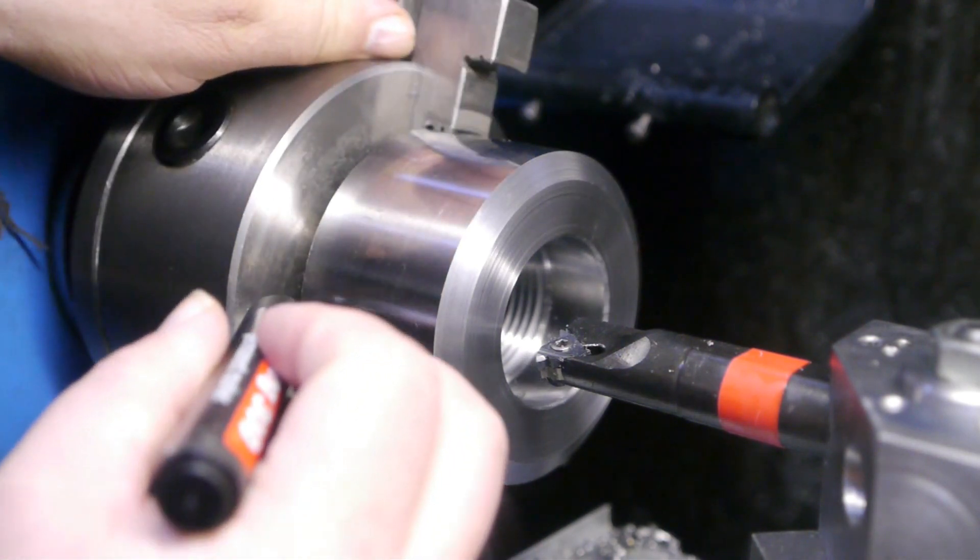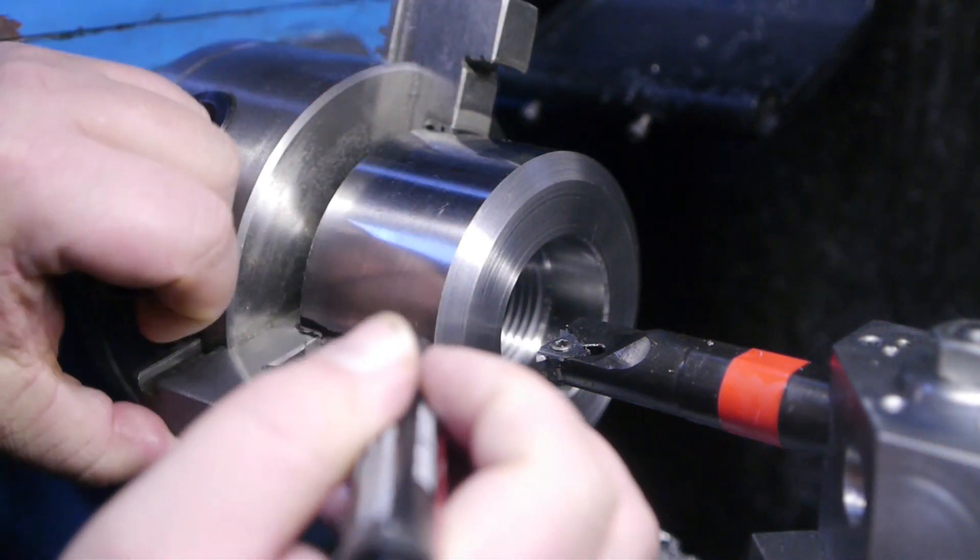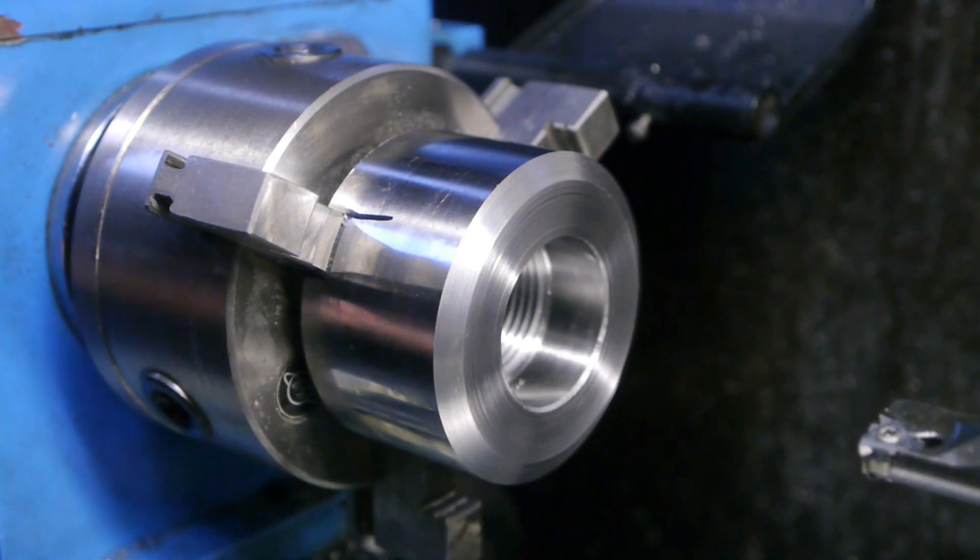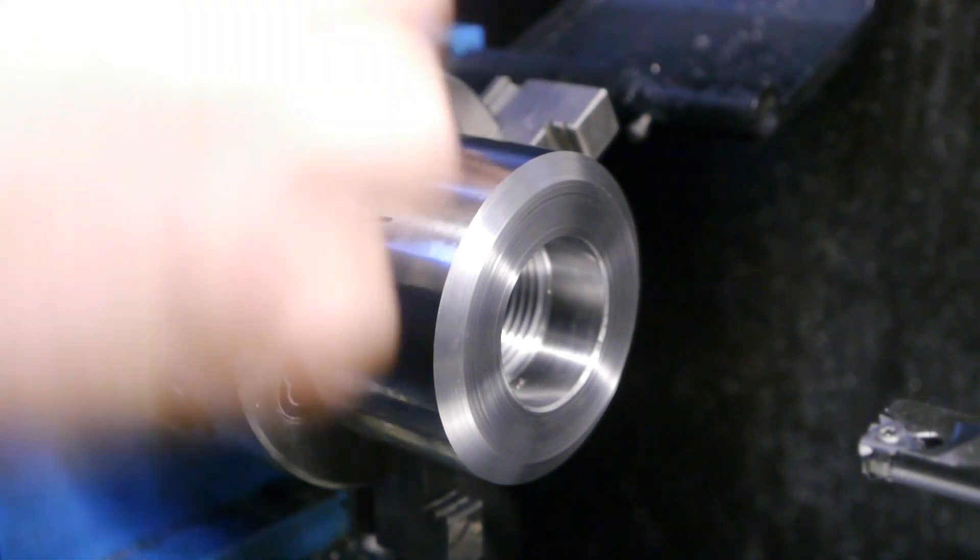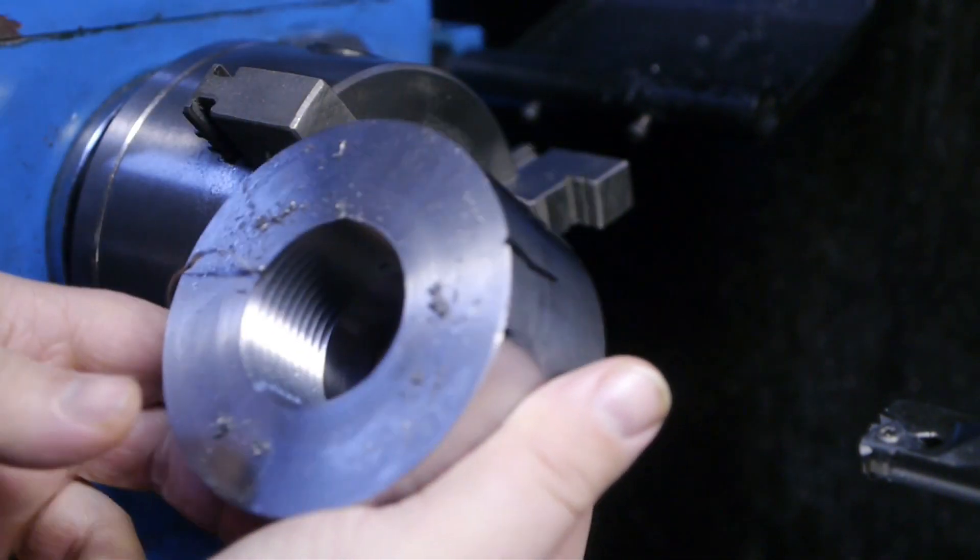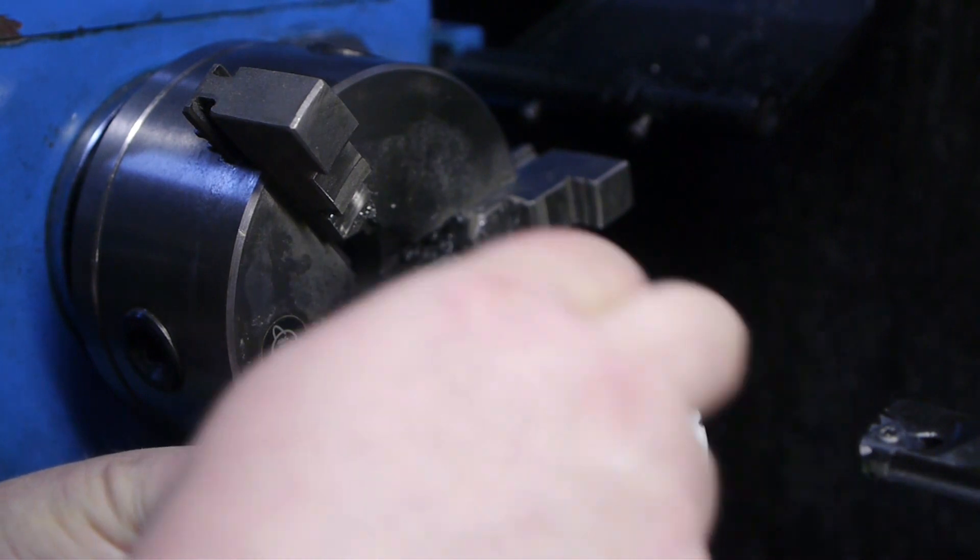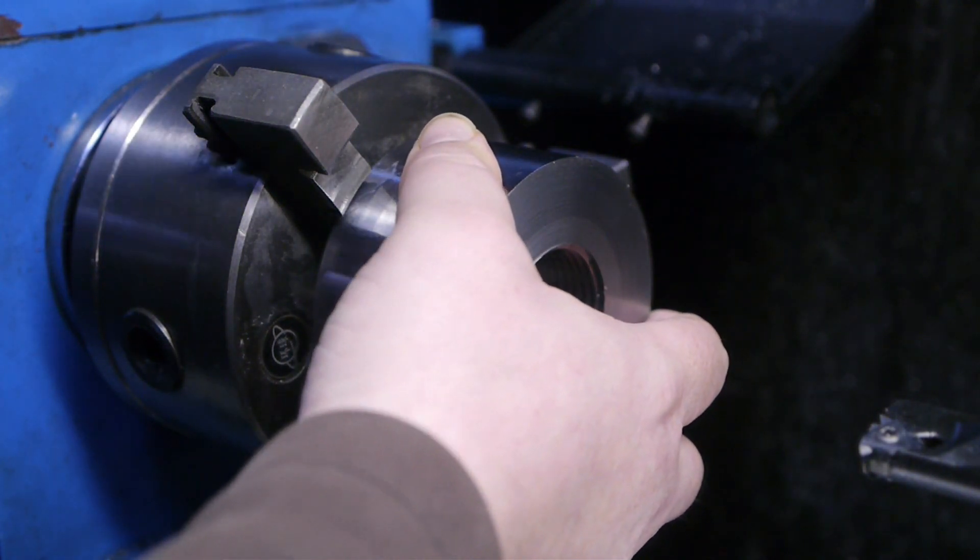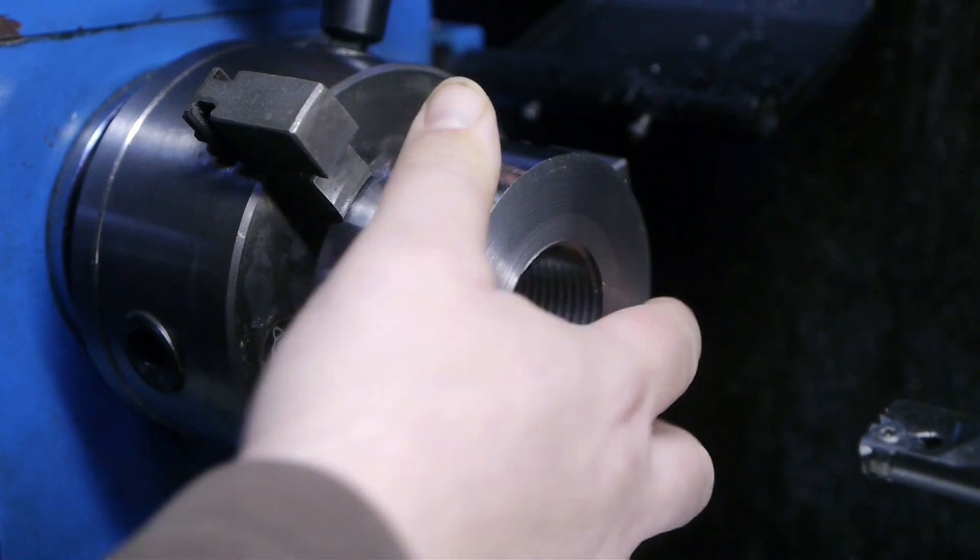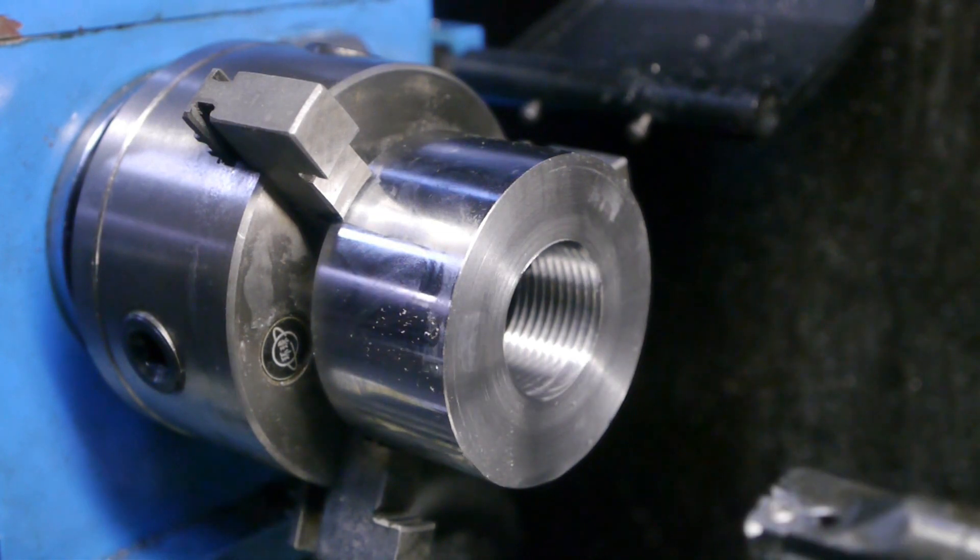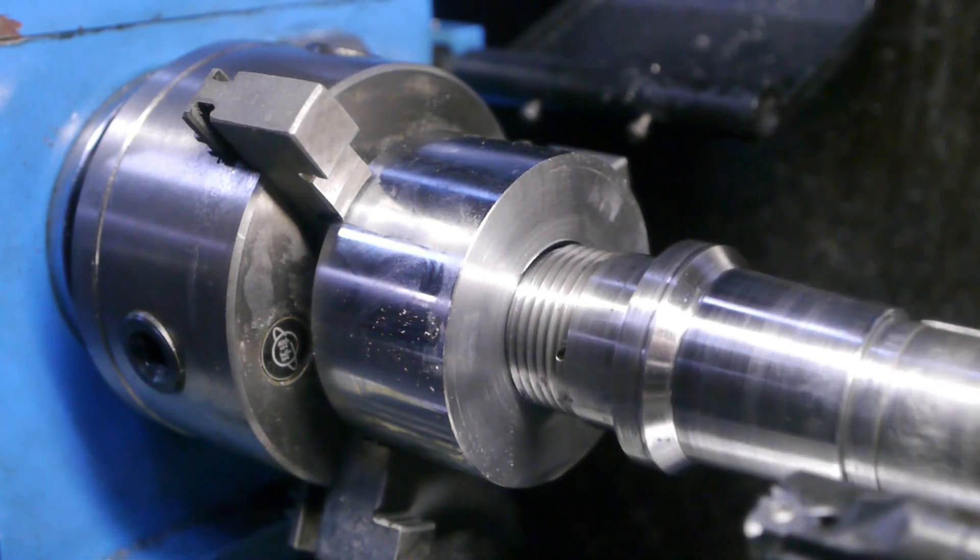First I'll mark the location in the chuck so I can more or less get it back in the same position, but I might need to use the 4-jaw. Don't worry, I'm not gonna run it like this. I just want to see if the spindle will fit from this side. I was very close to finishing the thread, so maybe it'll fit.